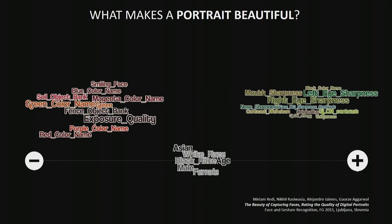Not only does this algorithm work well for this task, but because we carefully designed our features to be interpretable and to directly map portrait photography rules, we can also understand what makes a portrait beautiful from an algorithmic perspective. For example, things like the sharpness of the face landmarks — eyes and nose — are positive indicators of portrait beauty. There is a second group of features that are also positive indicators, and a third group which are not predictive at all for portrait beauty.